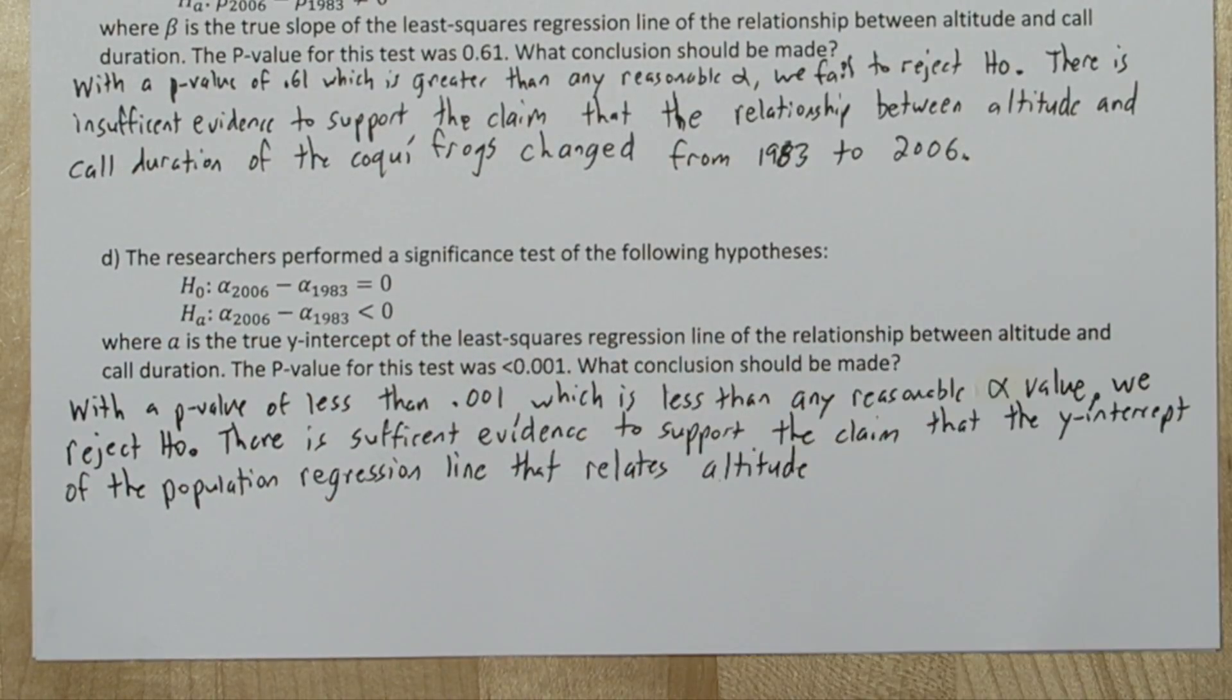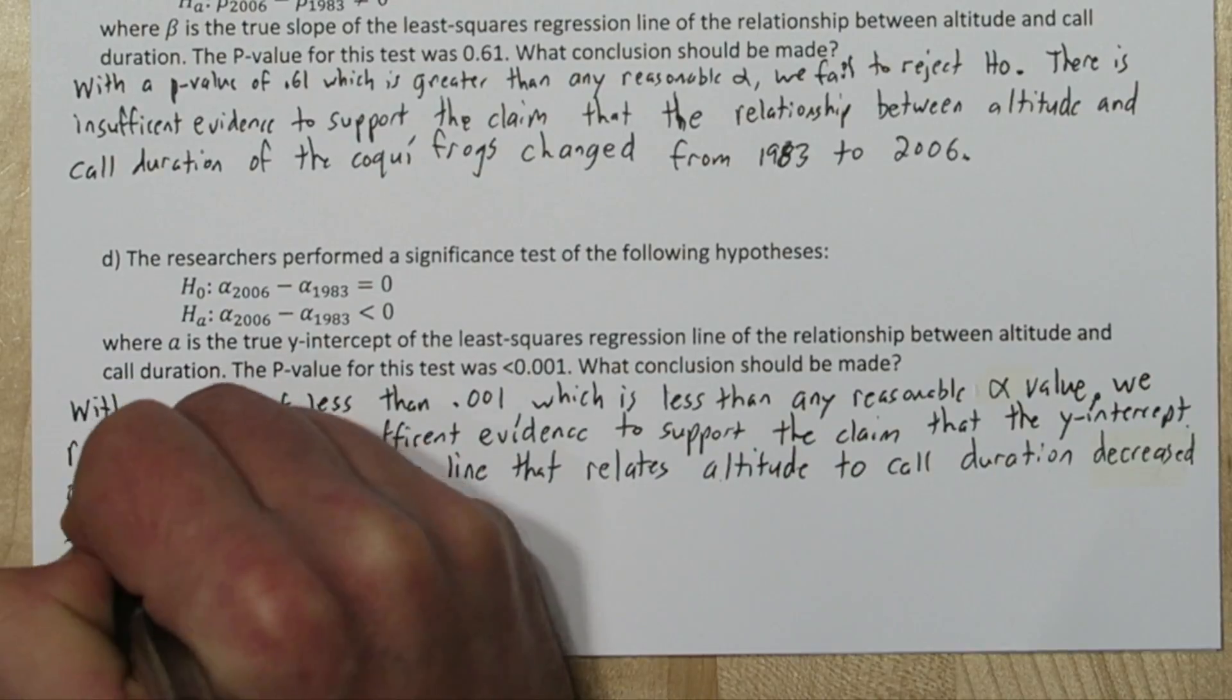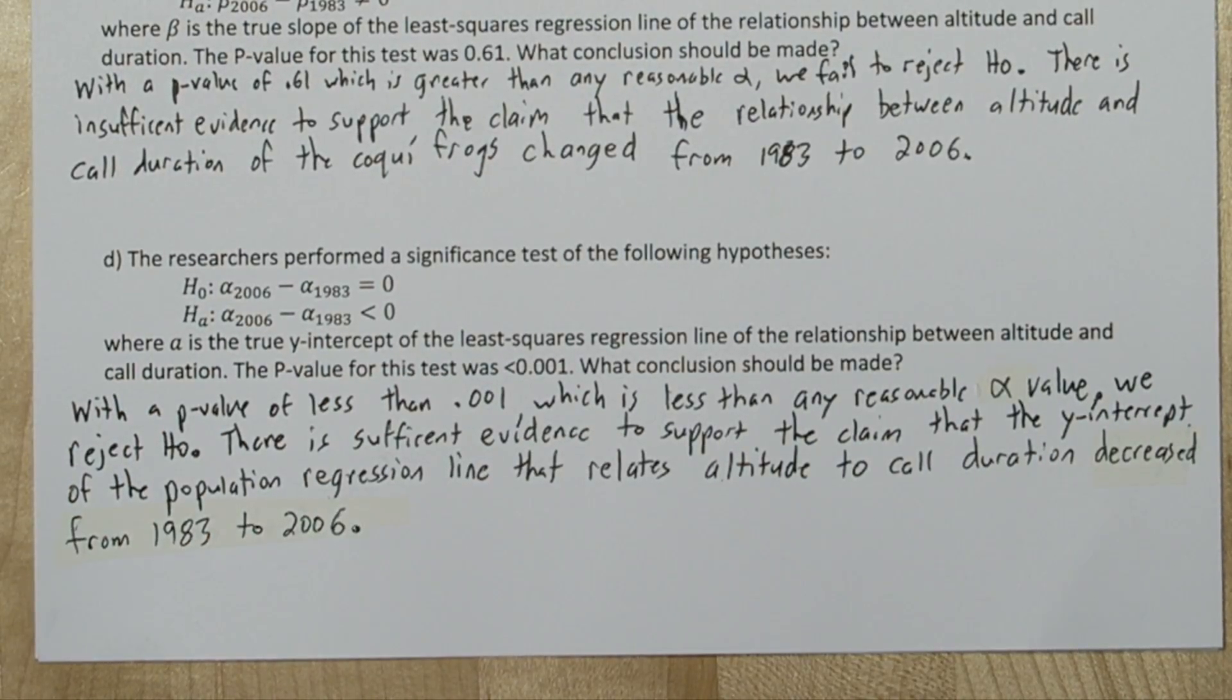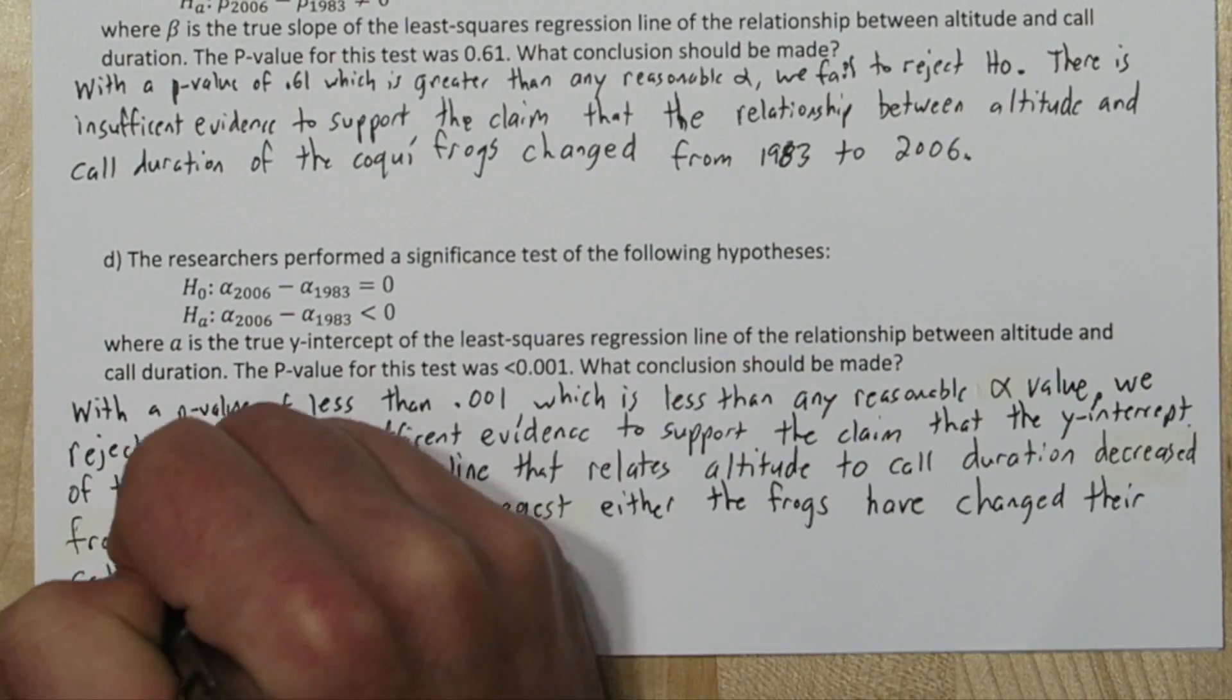There is sufficient evidence to support the claim that the y-intercept of the population regression line that relates altitude to call duration decreased from 1983 to 2006.